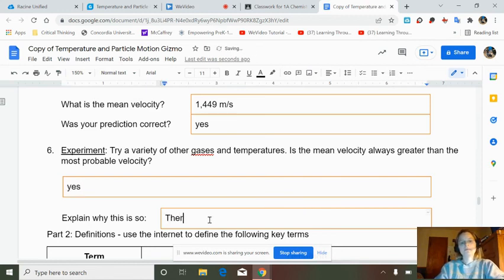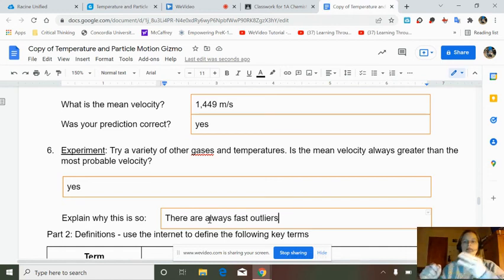Why is this so? There are always fast outliers. Like I said with the example above, if you have three numbers, you have two, you have two, and you have 27. You write those down on paper. You put them in a bag. Your most probable pick out of that bag is two. But if you took all three of those numbers and added them and averaged it, the average is going to be way higher than the most probable.